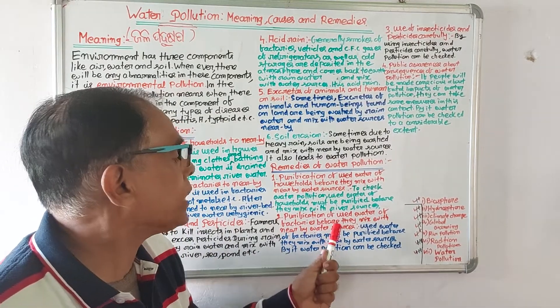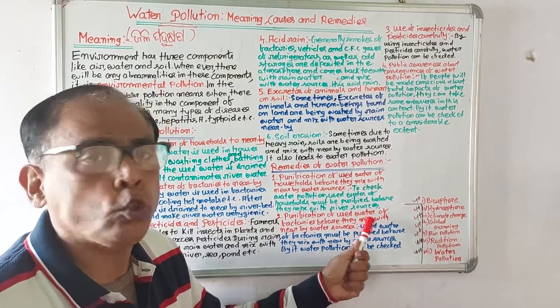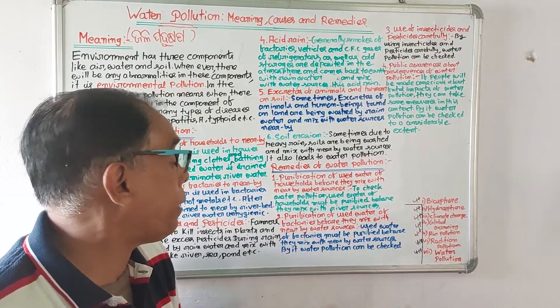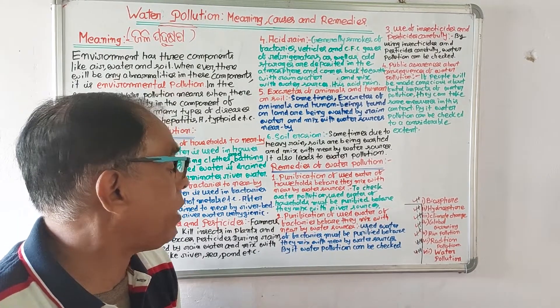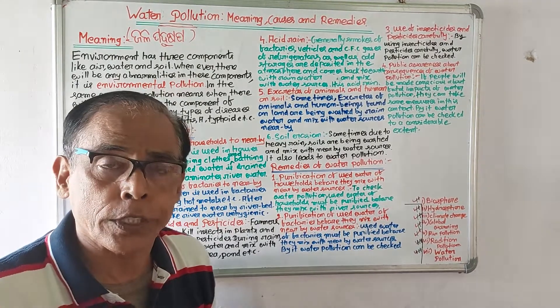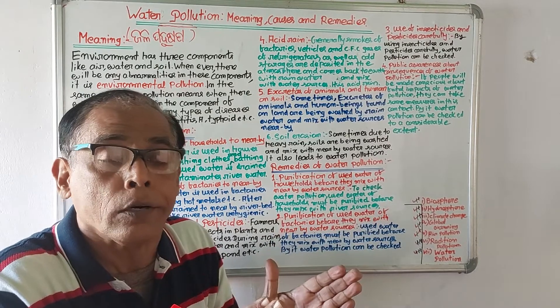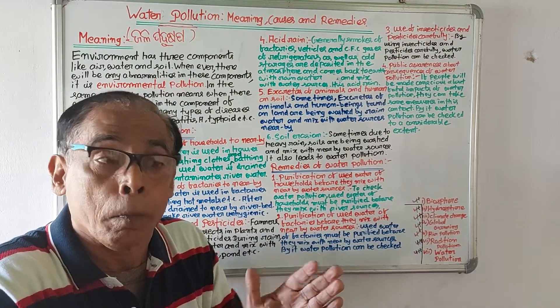The purification of used water from factories before they mix with nearby water sources is an important control measure for reducing industrial water pollution.